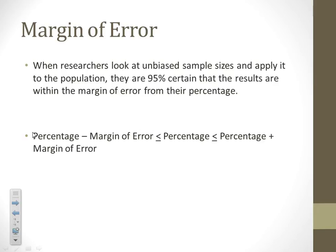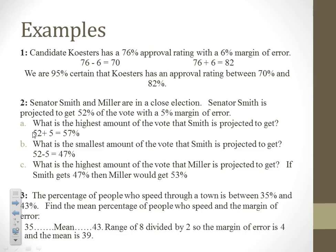Let's look at some examples. Candidate Kesters has a 76% approval rating with a 6% margin of error. That means they're 95% certain that Kesters has an approval rating between 70% and 82%, because you add and subtract the margin of error from the percentage.